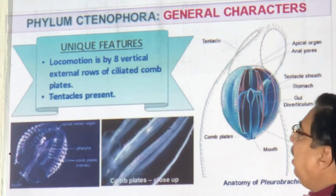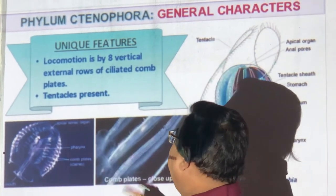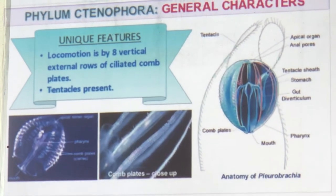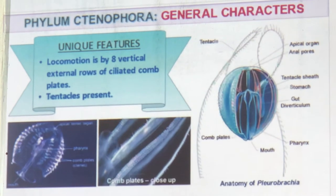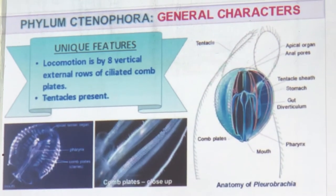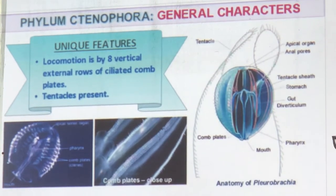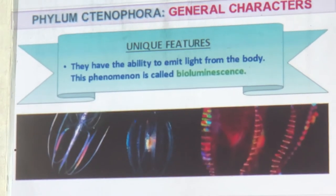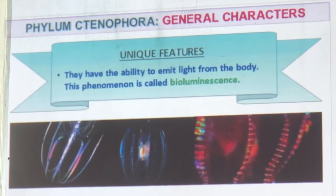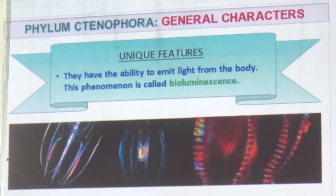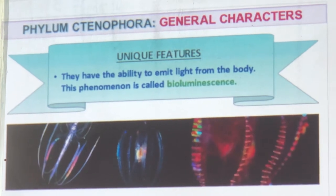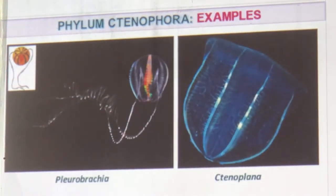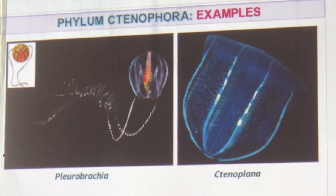The unique features of Ctenophora are eight vertical rows of ciliated comb plates that look like spikes — no other animal has these. Tentacles are also present. Bioluminescent light comes out of the body and attracts smaller animals to eat — like fireflies but in the ocean. They shine beautifully in the deep ocean. Examples in our syllabus: Pleurobrachia and Ctenoplana.